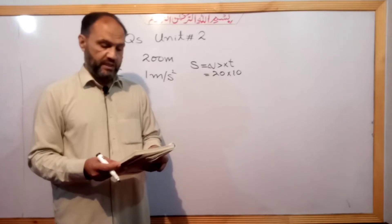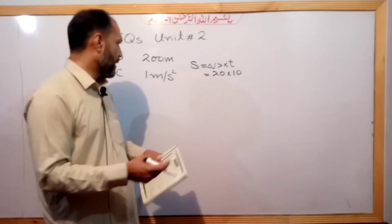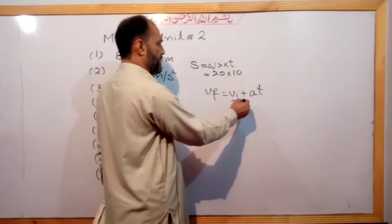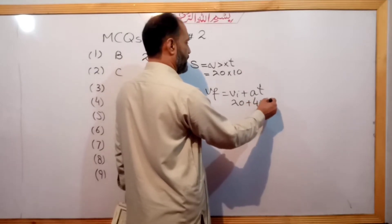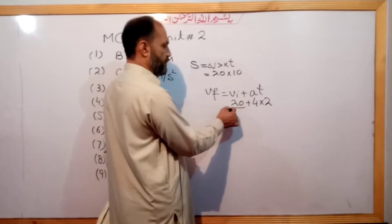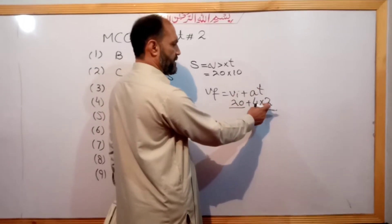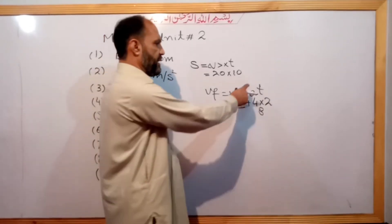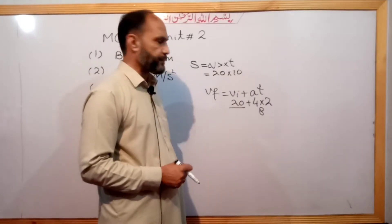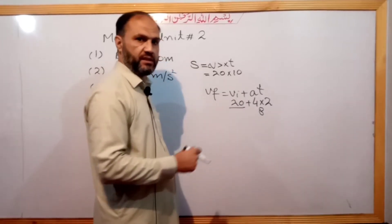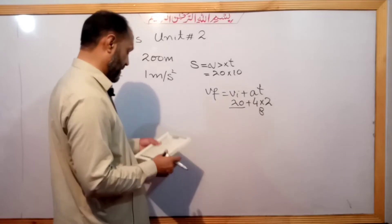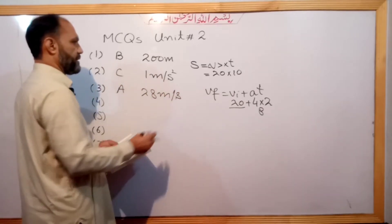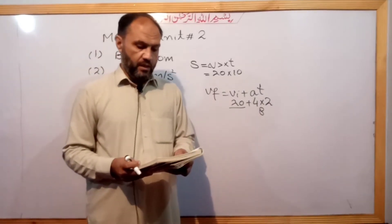The acceleration is 4 meter per second squared. Using the equations of motion, the change in velocity is 8, so the final speed increases. The initial speed was 20 and the change gives a final speed of 28 meter per second. That is option A: 28 meter per second.